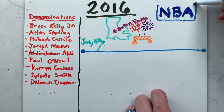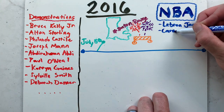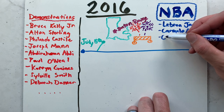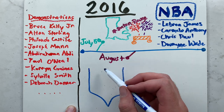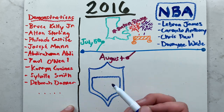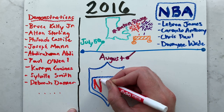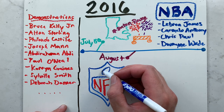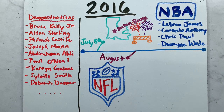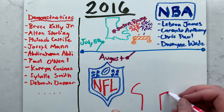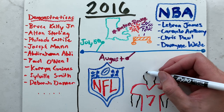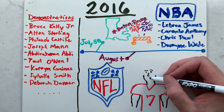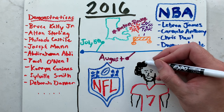In that same month, NBA stars LeBron James, Carmelo Anthony, Chris Paul, and Dwayne Wade opened the 2016 ESPY Awards with a Black Lives Matter message. Beginning in August, several professional athletes participated in the 2016 U.S. National Anthem protest. The protest began in the National Football League after Colin Kaepernick of the San Francisco 49ers sat during the anthem, as opposed to the tradition of standing, before his team's third preseason game of 2016.